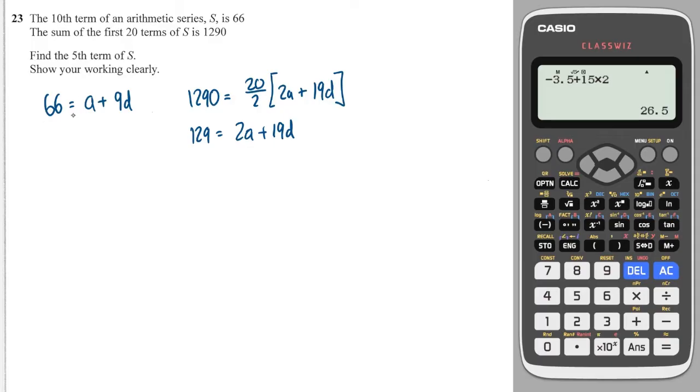I'll then double this equation. And 66 times 2 is 132. So 132 is equal to 2a plus 18d. And then I will subtract one from the other. So I'll write this one below this one, and I'll subtract. And that will give me minus 3 is equal to 1d.